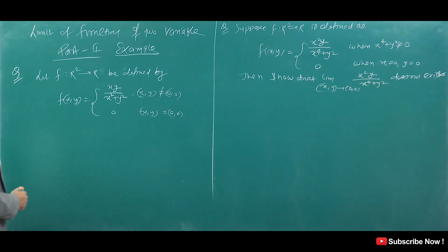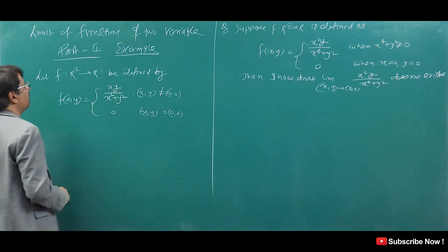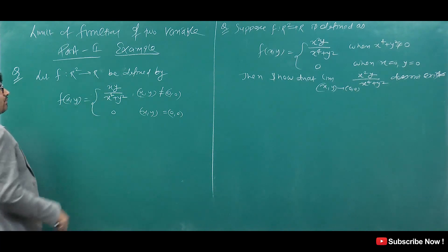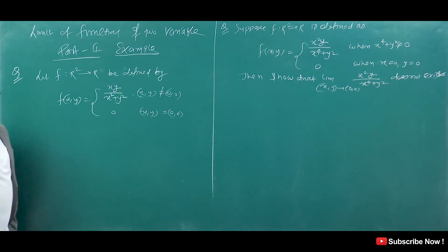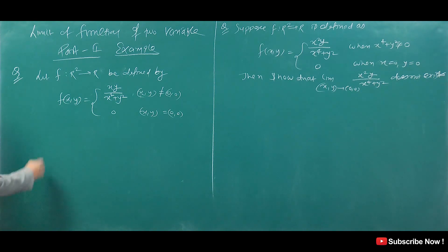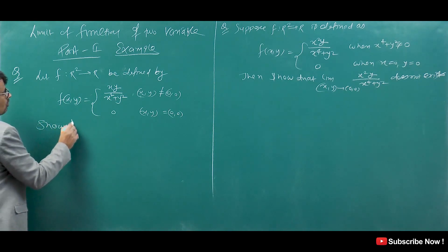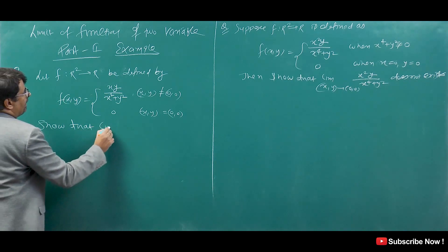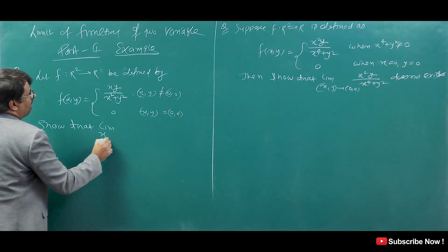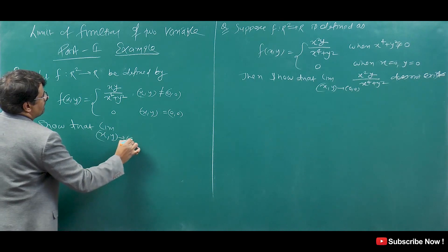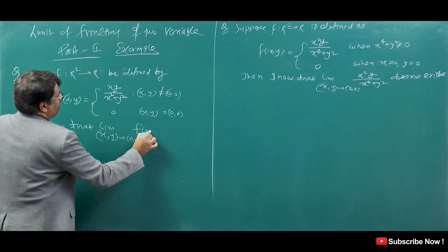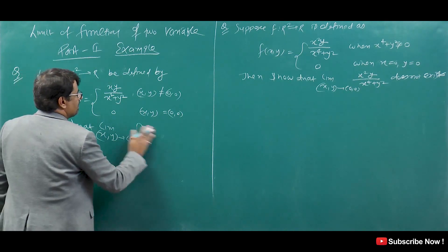Let f: R² → R be defined by f(x,y) = xy/(x² + y²) when (x,y) ≠ (0,0), and 0 when (x,y) = (0,0). We need to show that the limit as (x,y) tends to (0,0) of f(x,y) does not exist.